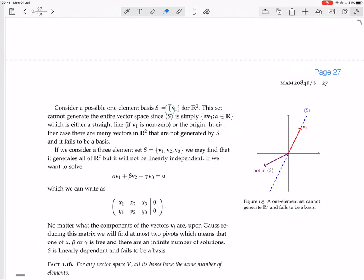Consider a possible one-element basis, V1, for R2. This set cannot generate the entire vector space, since the span of S is simply alpha V1, where alpha is an element of R, which is either a straight line if V1 is not zero, or the origin. And here's a picture of it, right? In either case, there are many vectors in R2 that are not generated by S, and it fails to be a basis. So here's a vector that's not generated by S, by this S, which is just this line.